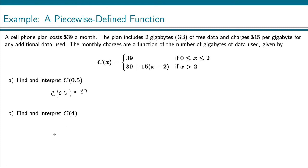Let's look at C(4). Find and interpret C(4). So C(4) equals, in this case x is 4 and 4 is greater than 2, so we're using this definition of the function here. So that's 39 + 15(4 - 2).